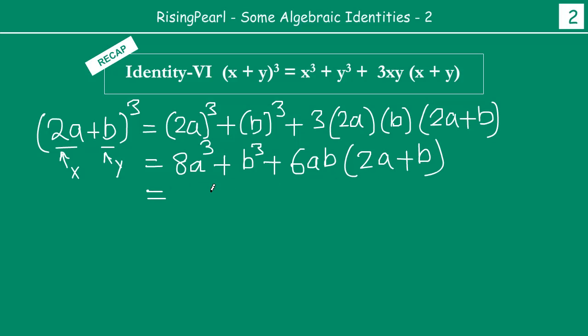And then finally you are going to expand this. So you get 8a cube plus b cube, plus if you open the first term, 6 times 2 is 12, a times a is a square and then b. So the first term will become 12a square b, plus the second term, that will be 6ab times b, will be 6ab square. So this is your identity 6.